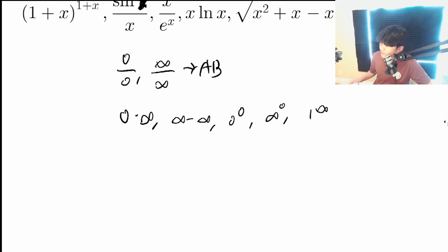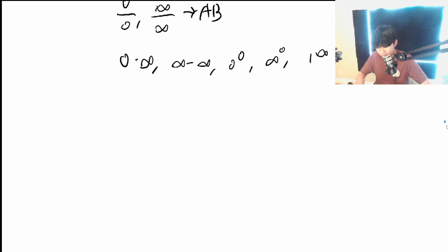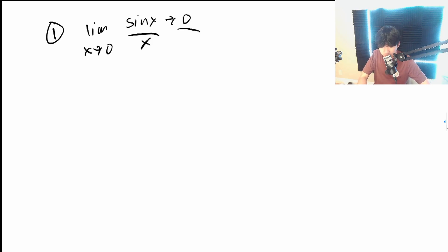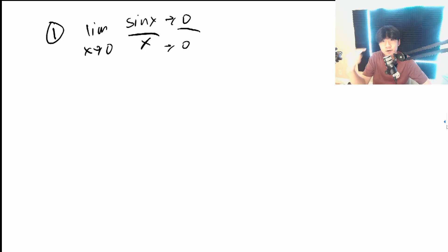I'm going to go through some example problems of how you should deal with these. The first problem is the limit as x goes to 0 of sine x over x. This is a classic problem — it's going to be the 0 over 0 case.